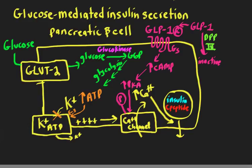Where does PKA come from? Protein kinase A is cyclic AMP-dependent protein kinase, so we need an increase in cyclic AMP, which comes from a G protein coupled receptor coupled to Gs, increasing adenylate cyclase activity. The important Gs receptor on the beta cell is the glucagon-like peptide 1 (GLP-1) receptor, which binds GLP-1, a gastrointestinal hormone secreted in response to a meal. GLP-1 is inactivated by dipeptidyl peptidase 4 (DPP-4), which terminates its action.